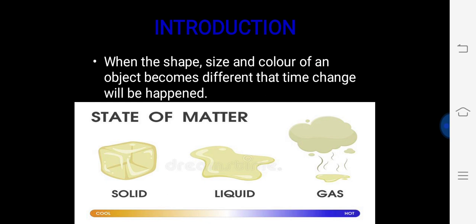Introduction: What is change? When the shape, size, and color of an object becomes different, that is when a change has happened. As you can see in the given picture, there are states of matter — solid, liquid, and gas — which each have their own shape and size.